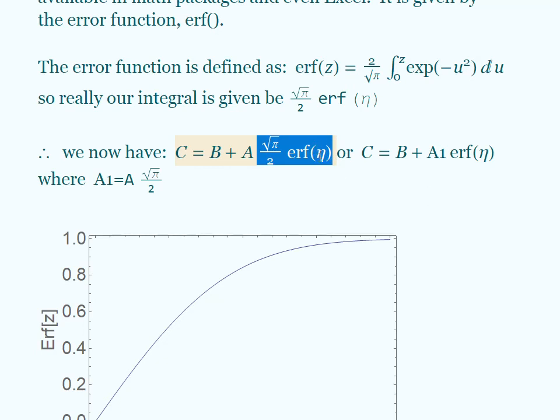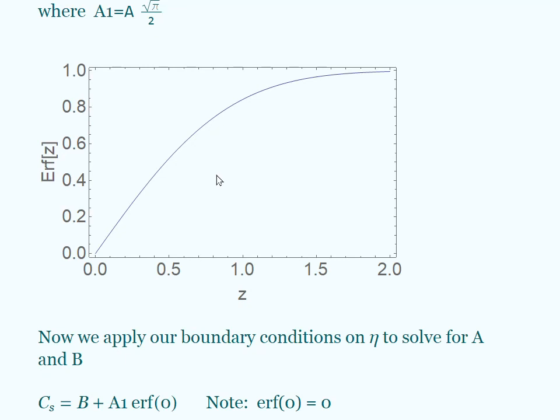Since this is a constant and this is a constant, we'll combine them. I'm just going to call that A₁ times the error function. The error function goes from 0 to 1. After about 2 or so, it plateaus at 1 and it stays that way. So at infinity, the error function is 1, and then it starts at 0.